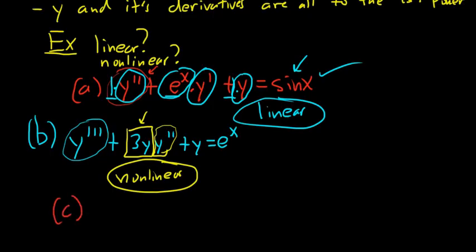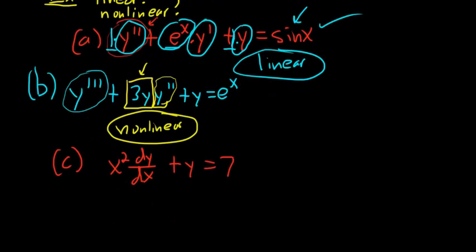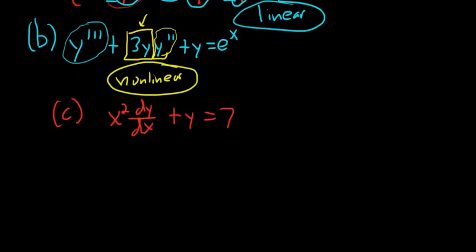Example C: x²(dy/dx) + y = 7. The order is 1. This one is linear because x² is a pure function of x, there's a 1 in front of y — also a pure function of x — and Y and all of its derivatives are to the first power. So this is linear.